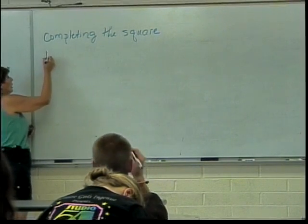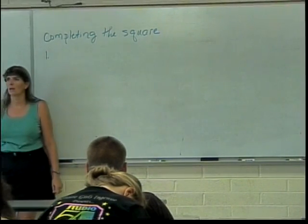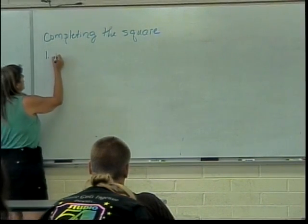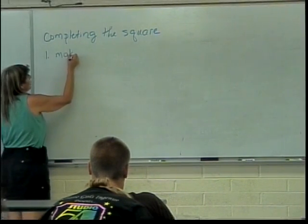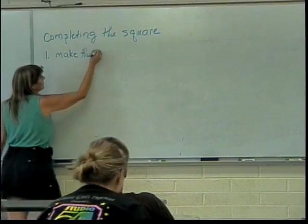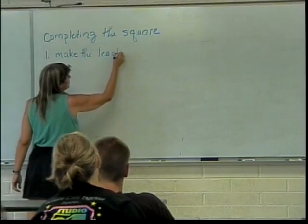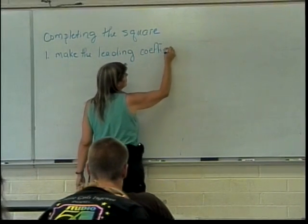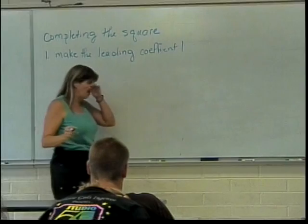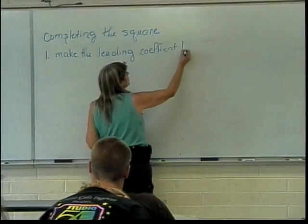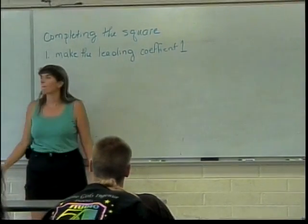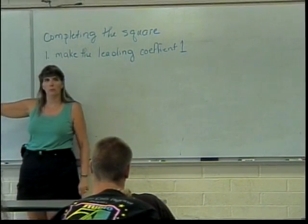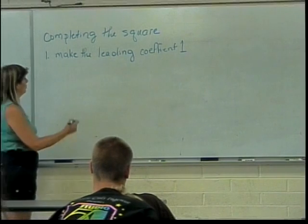Now, how do you rearrange everything to make it look like this? Step number one. I don't remember how many steps I had in this form. Step number one. Make the leading coefficient one. How do I do that in this problem? Divide by what? Divide by negative three because I need that negative three to become a one. So if I divide by negative three, I'll get there.